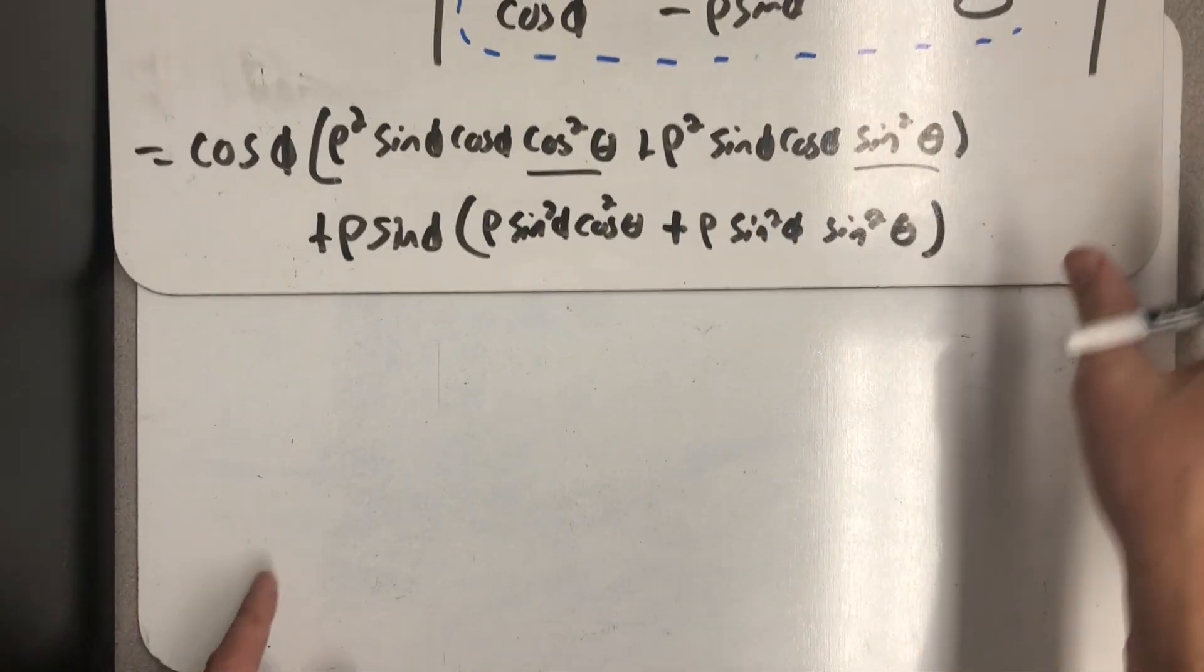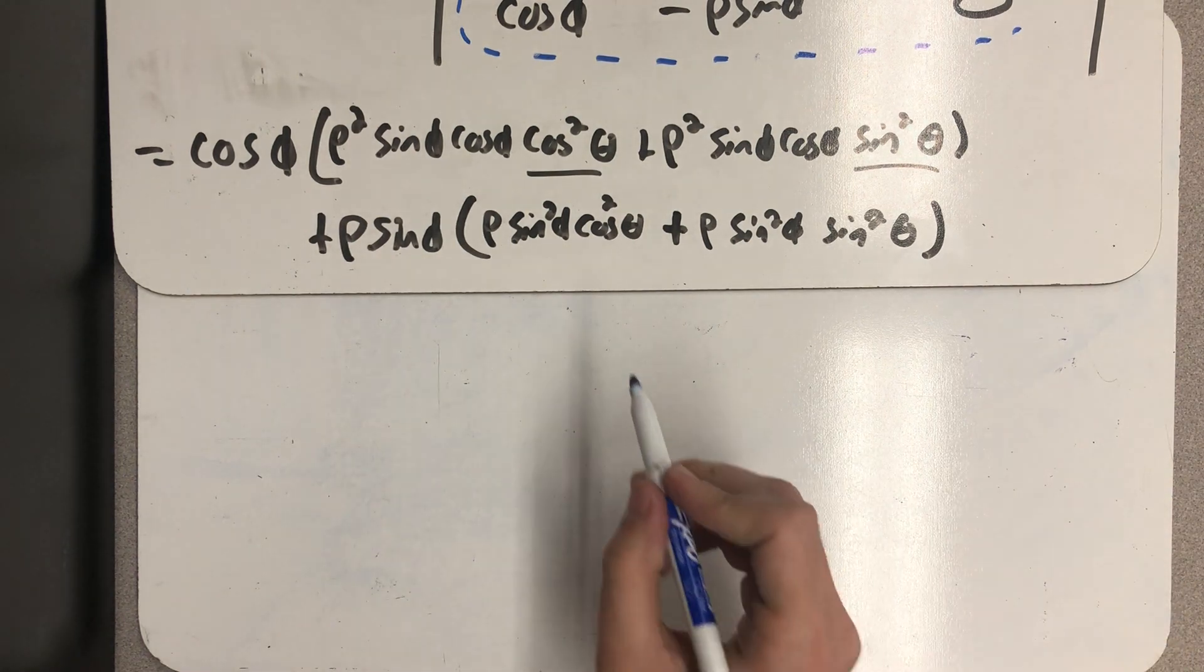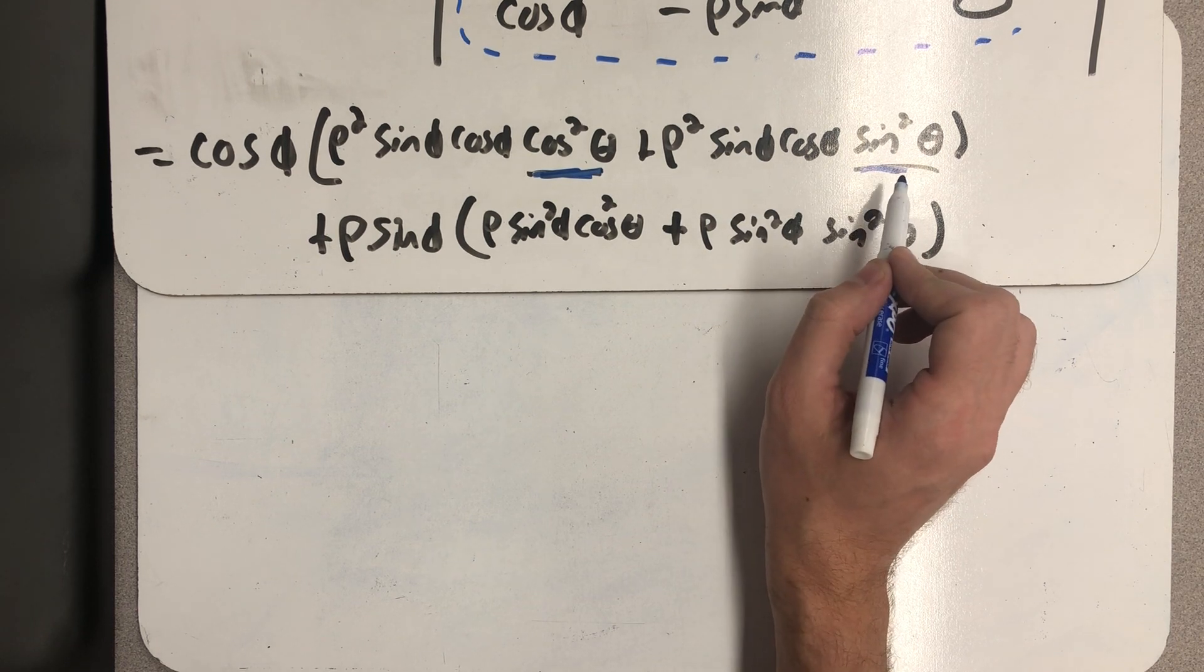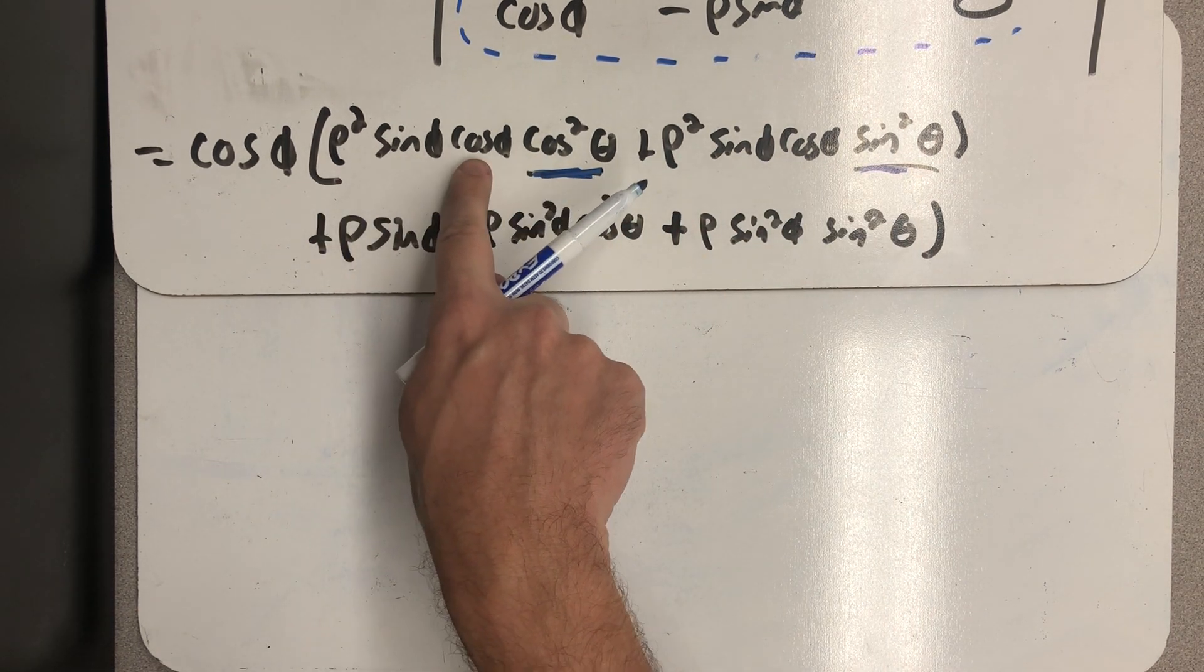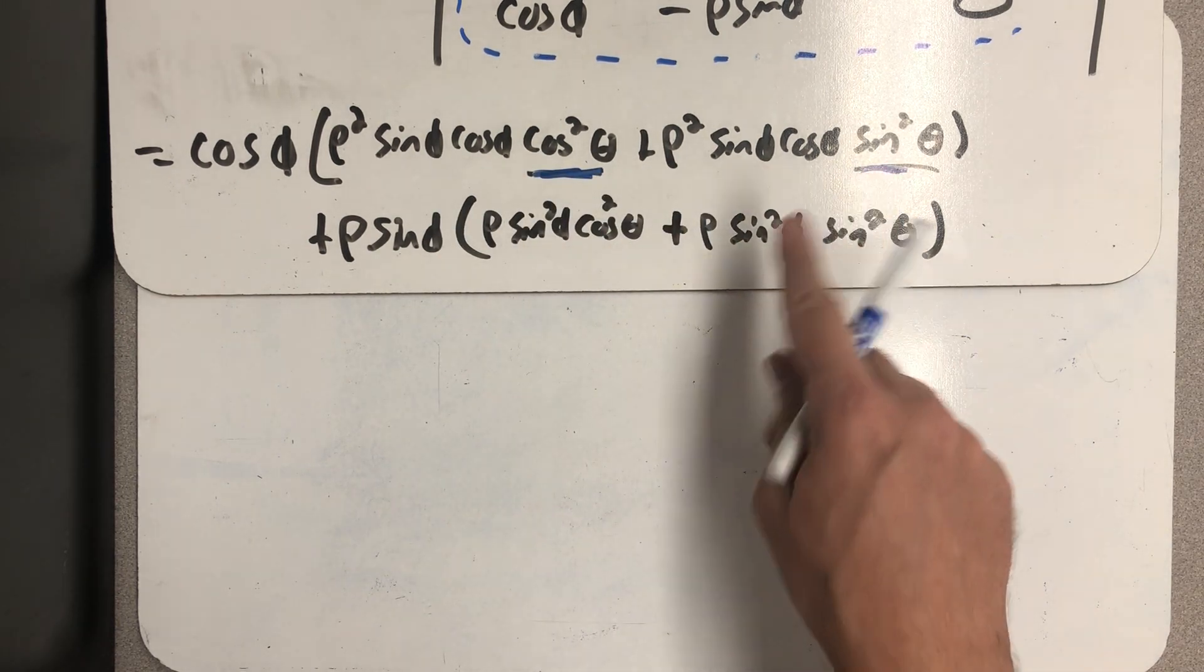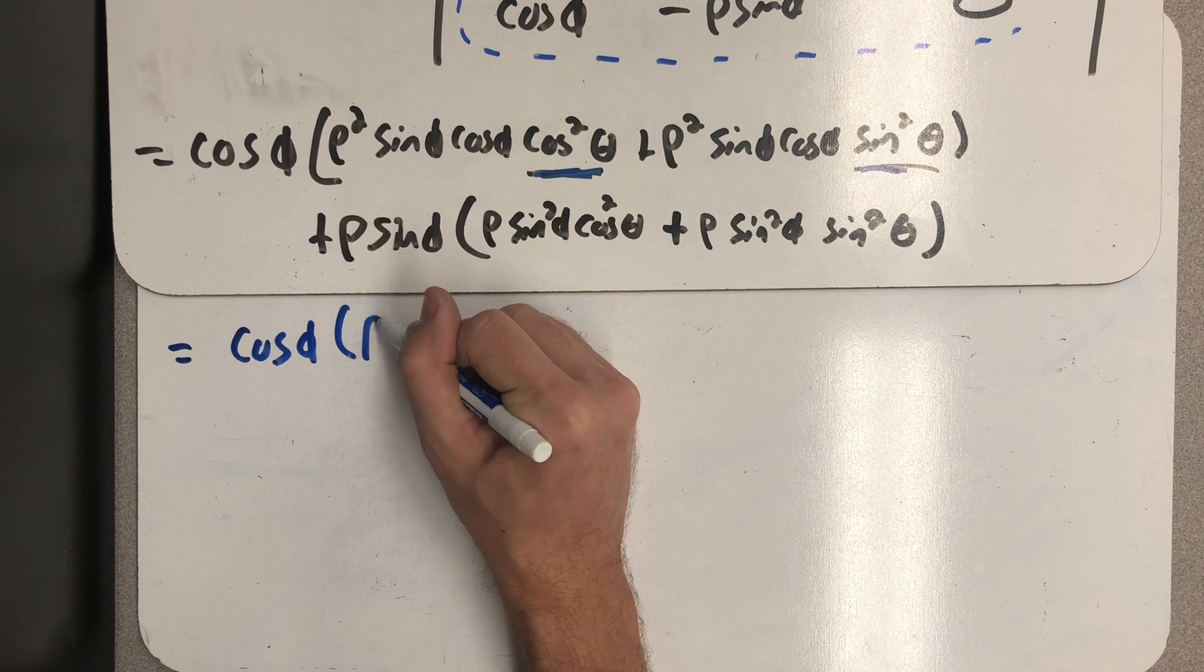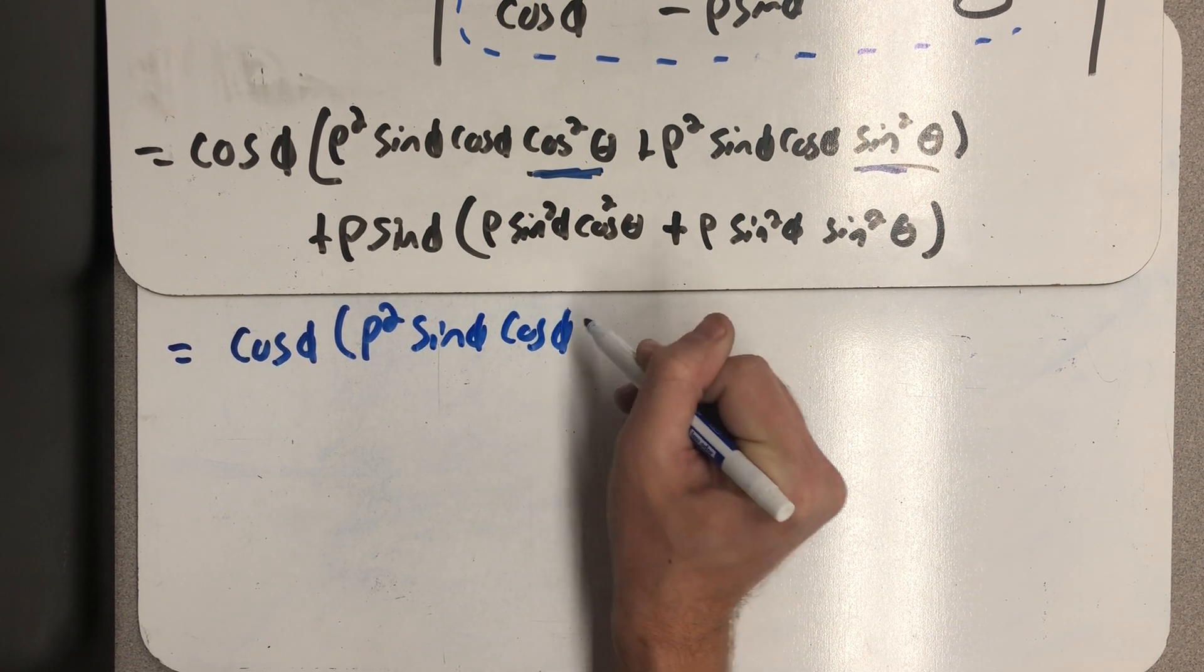All right, so I need to simplify that expression. And what I notice is that I have something times cosine squared plus the same something times sine squared. So I could imagine factoring away the rho squared sine phi cosine phi, and that would just give me cosine squared plus sine squared is one. So I end up with that thing. So let's see, that's cosine phi times rho squared sine phi cosine phi.